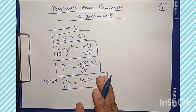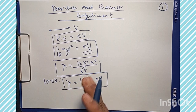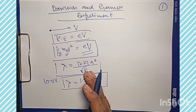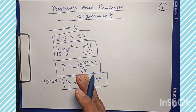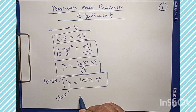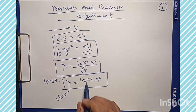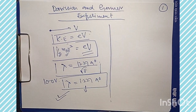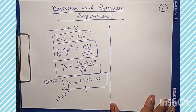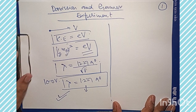Since this wavelength is comparable to the wavelength of X-rays, the de Broglie waves associated with these electrons should be diffracted by a crystal, as they show a wavelength of 1.227 angstroms comparable to X-ray wavelengths. This was confirmed by the experimental demonstration conducted by Davisson and Germer.